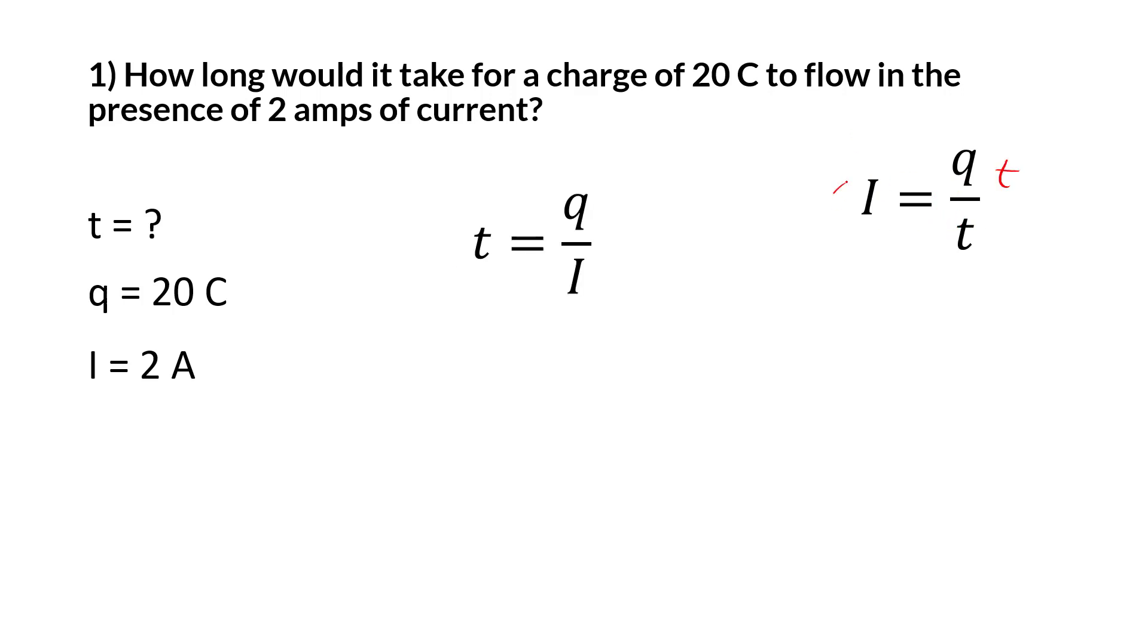You have to rearrange it for t. So t is down the bottom, you have to multiply out t to get it on the top. Anytime something's down the bottom that you're trying to solve for in the denominator, you're going to multiply it out by both sides. That will get t to the top of the other side. But now we don't want I there, so we're going to divide out I from both sides. You get t equals q over I, which is exactly what you see right here.